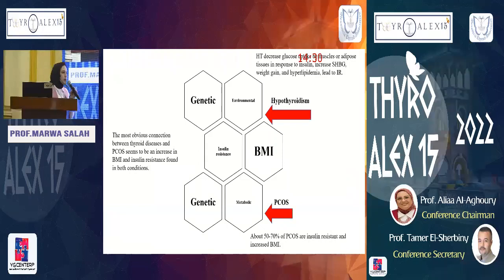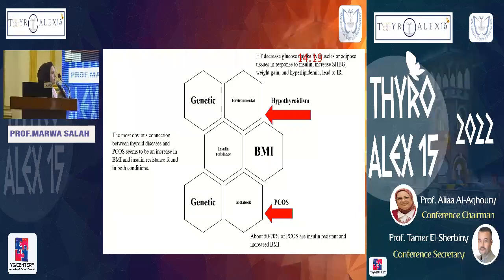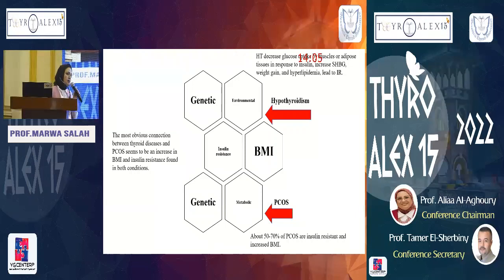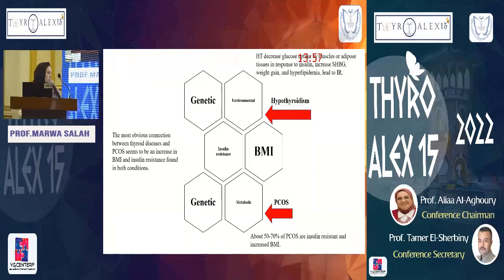Both disorders frequently occur together, but the actual pathophysiology is not well established. Hypothyroidism is usually due to genetic or environmental factors, while the etiology of PCOS includes genetic, hormonal, and metabolic factors. The most common connection between both conditions is increased body mass index leading to insulin resistance, which is commonly encountered in hypothyroid patients — and up to 70 percent of PCOS patients are insulin resistant with increased BMI.